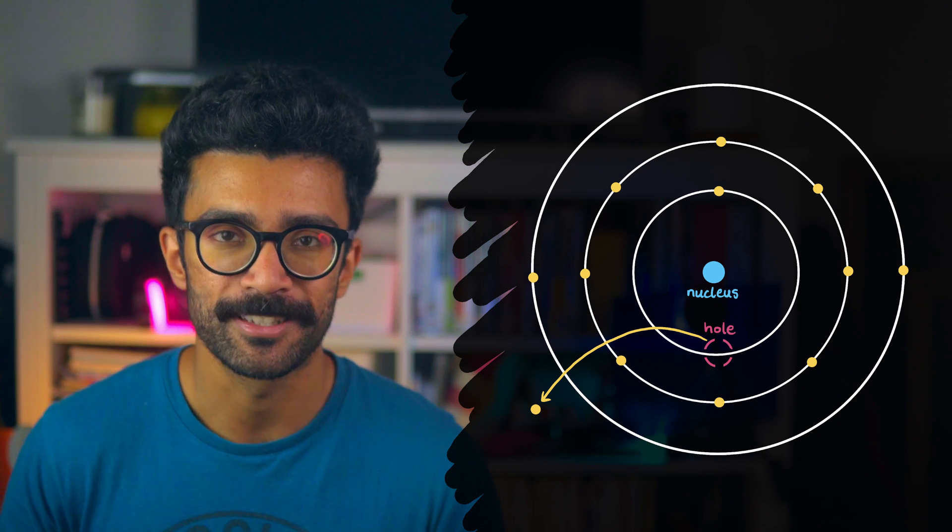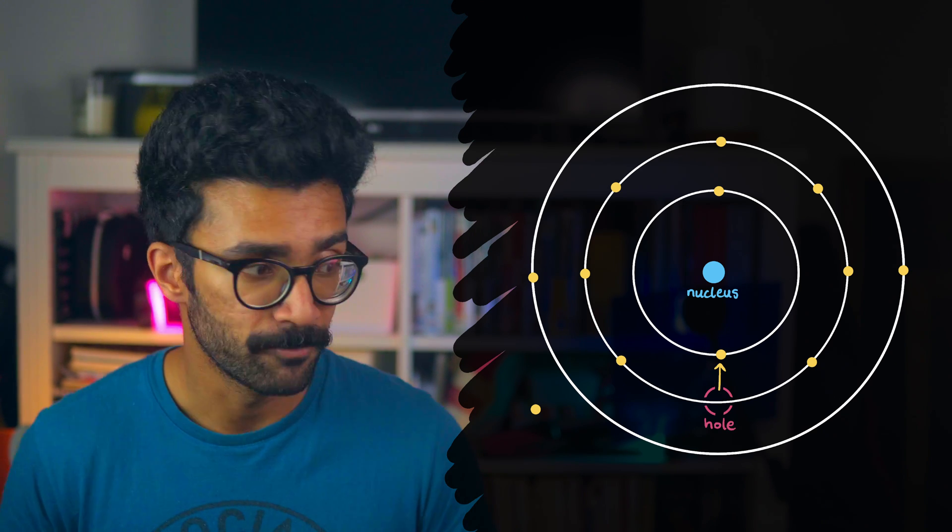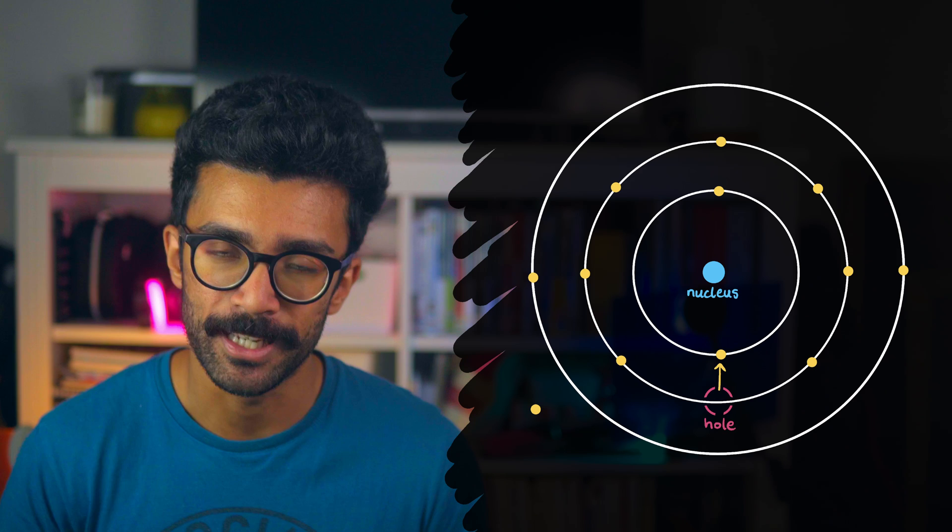For example, if in an atom an inner shell electron is ejected, this leaves behind what is known as a hole. Now, this hole is an energy gap that can be filled by a higher shell electron, but then that electron leaves behind a hole in its place, and so on. It's also possible that all the electrons somehow rearrange themselves.